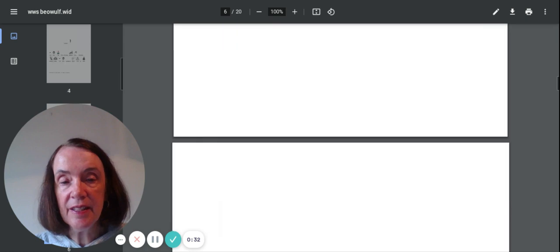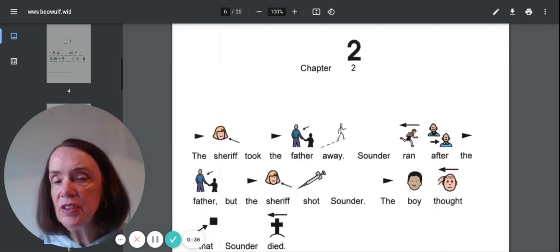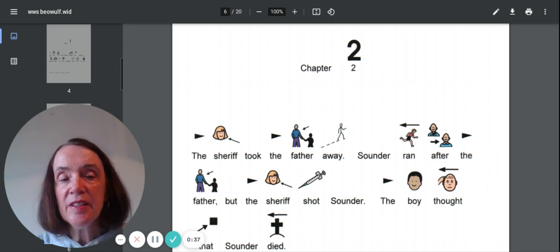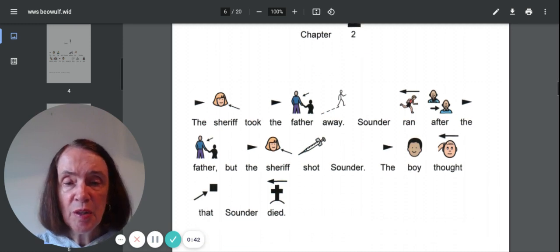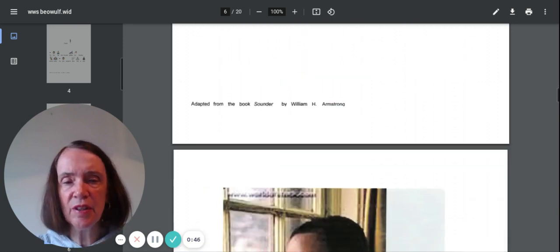Let's see. Chapter two says, the sheriff took the father away. Sounder ran after the father, but the sheriff shot Sounder. The boy thought that Sounder died. Oh, this is kind of a sad story.